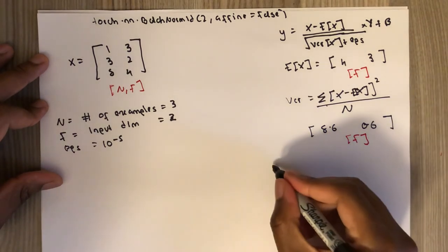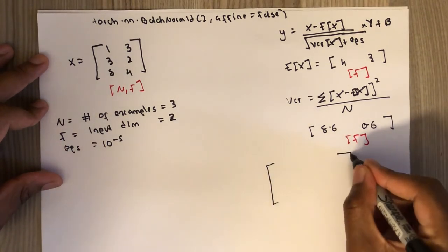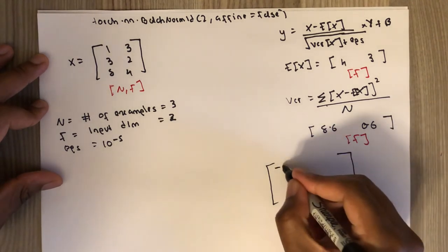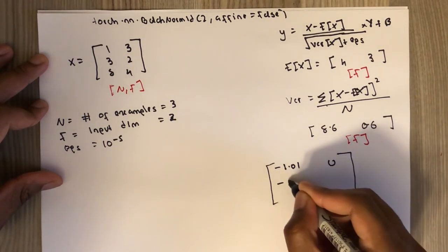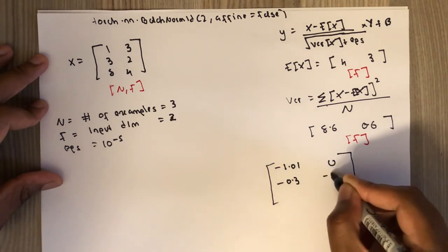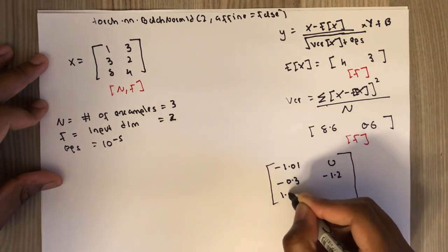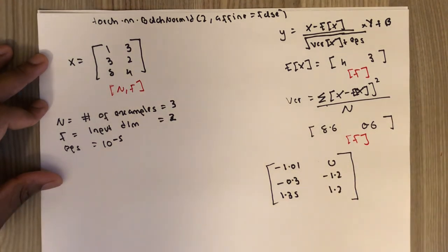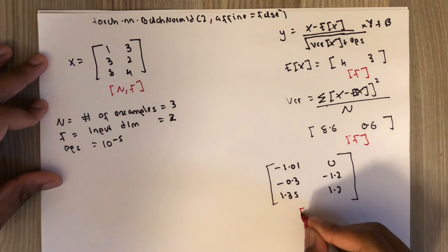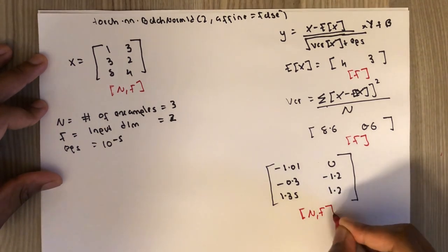So if you plug everything in the formula, you will end up with a result something like this. The input and output dimension is always the same.